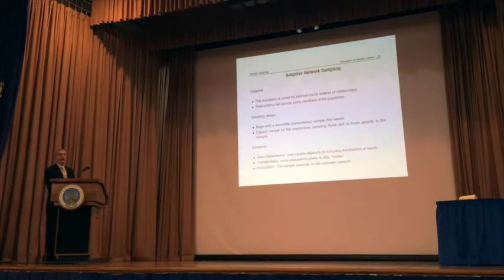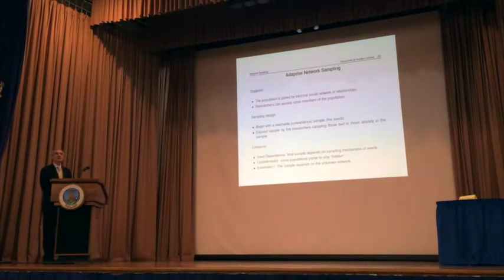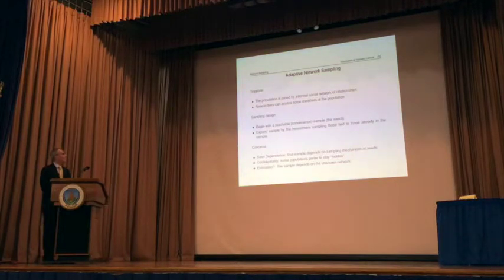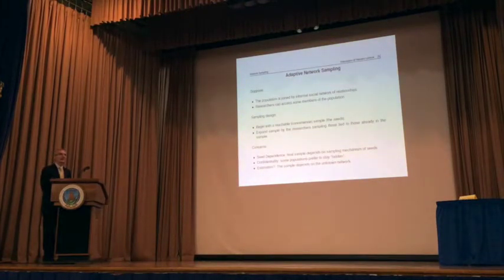To review the ideas of adaptive network sampling: the core idea is that the population of interest is joined by an informal social network. In addition to outcome variables, we have this social network of relations as auxiliary information we want to exploit. The adaptive sampling design begins with a reasonable, possibly convenient, sample of people from the population of interest, and then expands that sample by sampling those tied to those already in the sample.